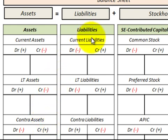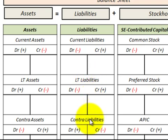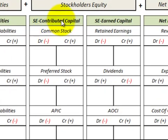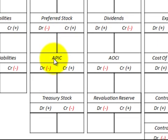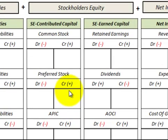The rest of the chart follows the same way. Under liabilities we have current liabilities, long-term liabilities, and contra liabilities. Moving over to stockholders equity, we've got contributed capital, which includes common stock, preferred stock, additional paid-in capital, and treasury stock — noting the debits and credits in each case.